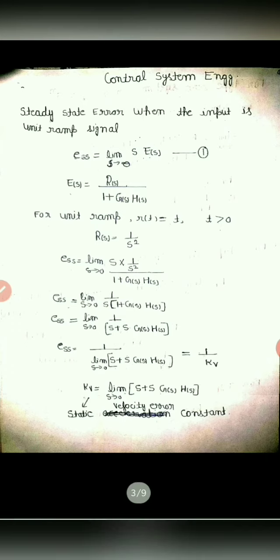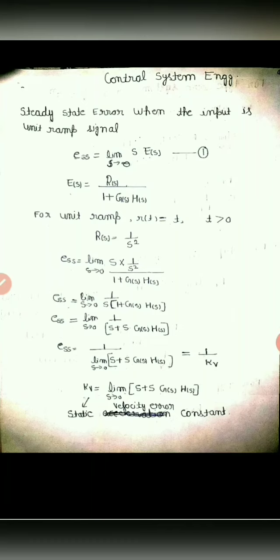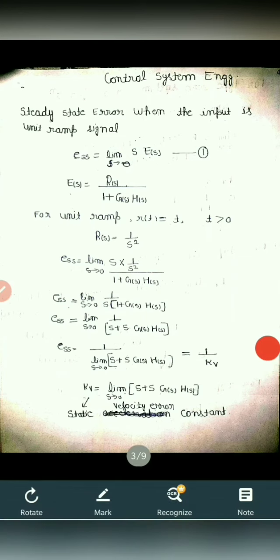KV is also called the static velocity error constant. The steady state error when we give input as ramp signal is equivalent to 1 over KV. So if we find the velocity error constant value, we can estimate steady state error, because there is a relationship between steady state error and velocity error constant.